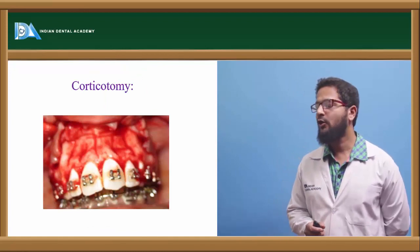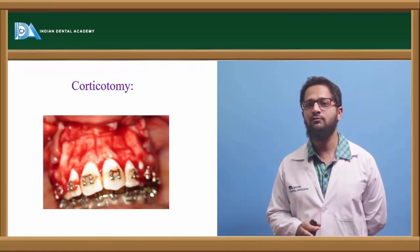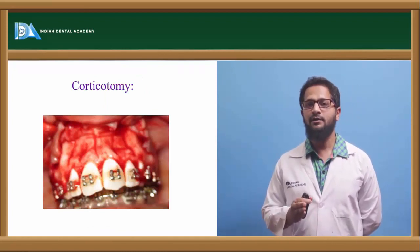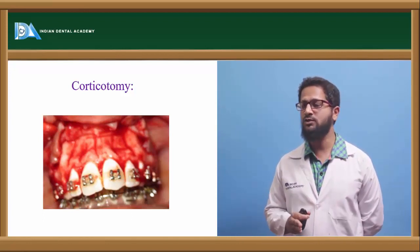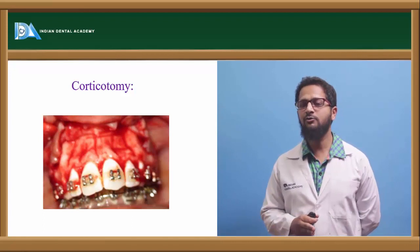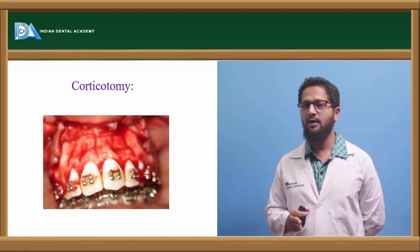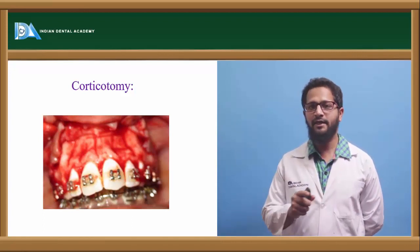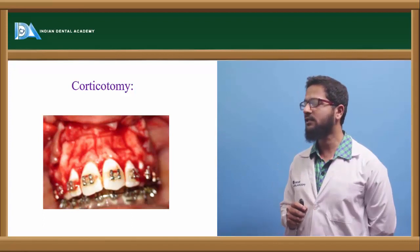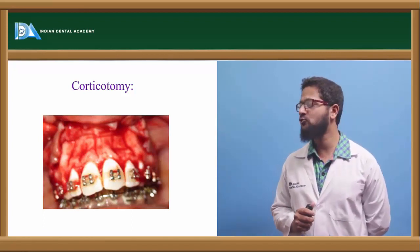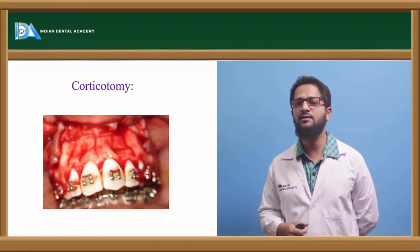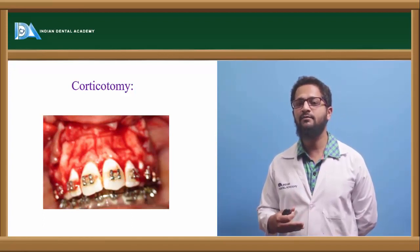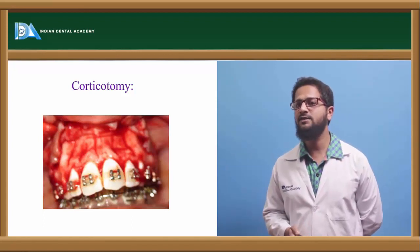Next is corticotomy. Corticotomy is a minor surgical procedure wherein cuts are made within the cortical bone between adjacent tooth roots. These cuts are made parallel to the long axis of the tooth root, and these vertical cuts are connected by horizontal cuts. The cuts can be made with a surgical bur or with a piezotome. The main principle is that it alters bone metabolism, and when forces are applied, it initiates rapid acceleratory phenomena, making tooth movement occur faster.